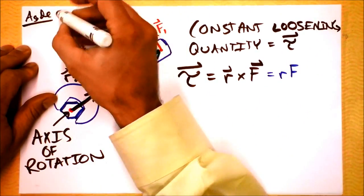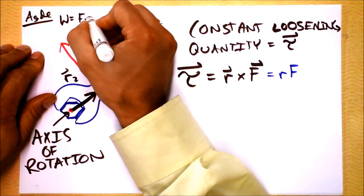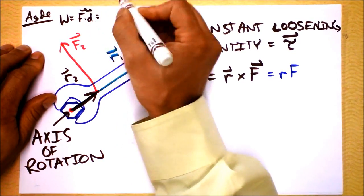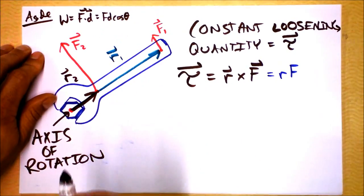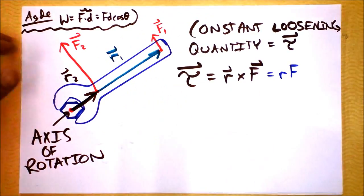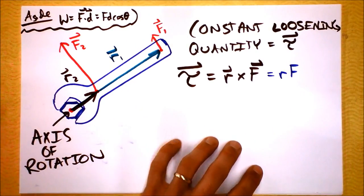You remember that a dot product is, for instance, work is F dot D. And you remember that that was F times D times cosine of the angle between F and D. So we're probably not going to use cosine. It probably has something to do with the sine of the angle.